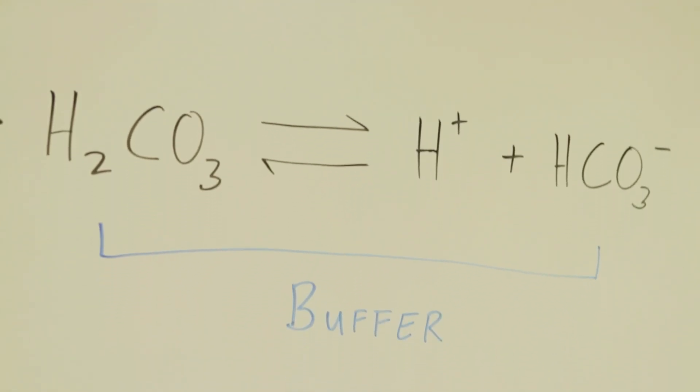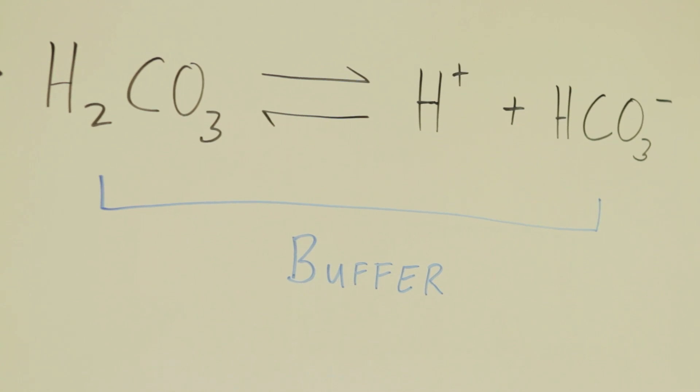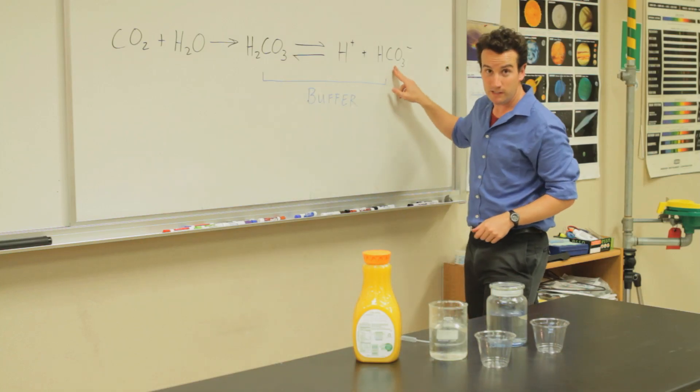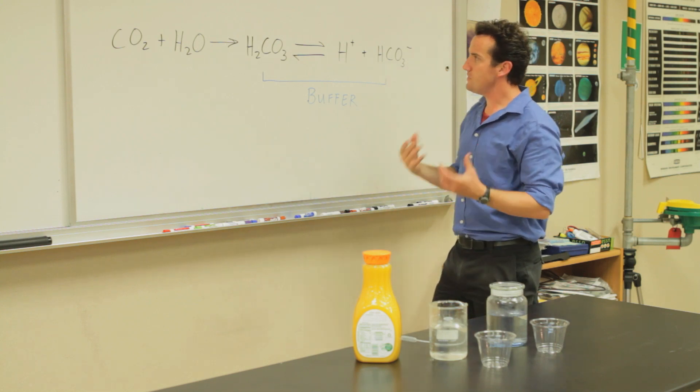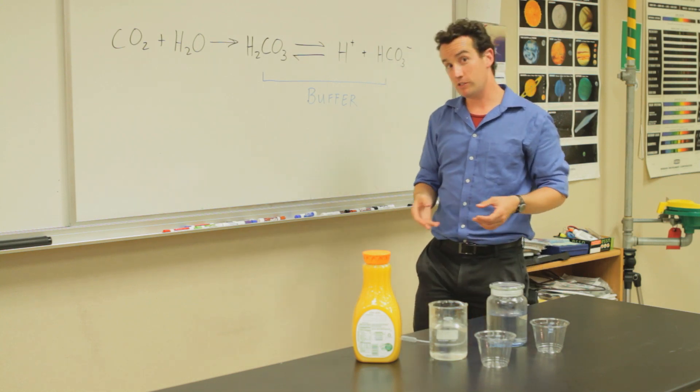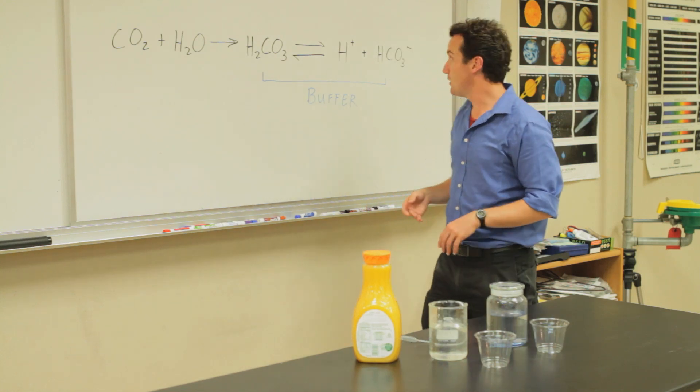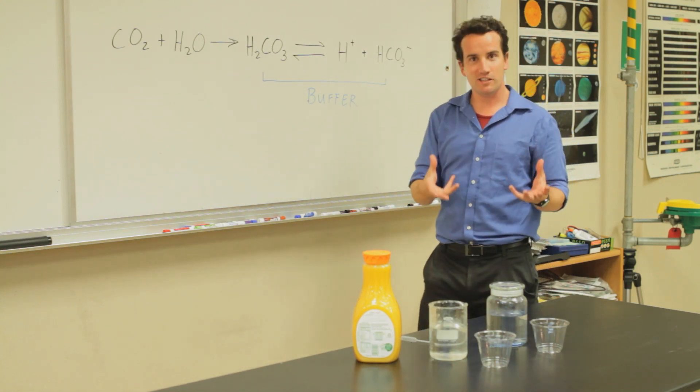The buffer is actually both parts of the equation at the same time. It's the acid and the conjugate base. When an acid is added to your bloodstream, for example, orange juice in the morning when you drink at breakfast time, then you're going to add acid to the bloodstream.